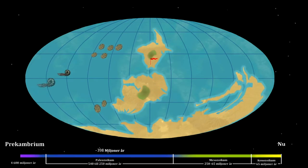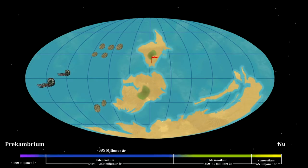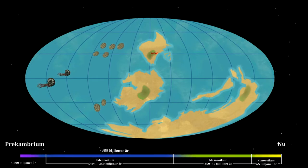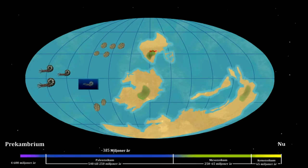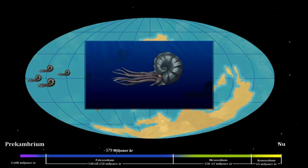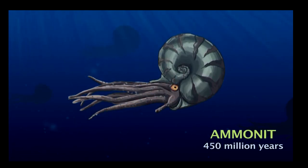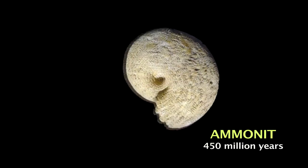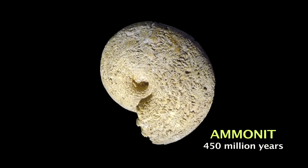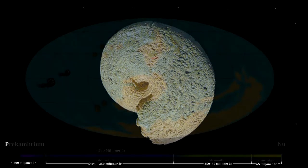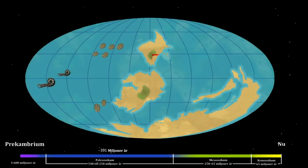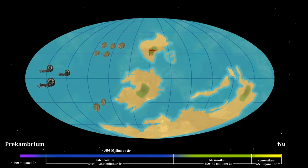Forests of mosses and ferns began to grow. In the oceans, fish and other animals like the ammonite — ammonites were cephalopods in shells, with shells ranging from a few centimetres to 2.5 metres long. Plants were food for the animals, some of which began to creep out of the sea.